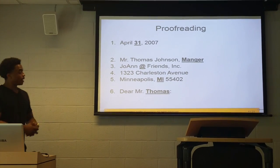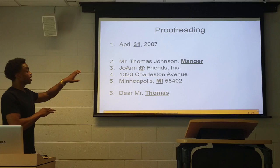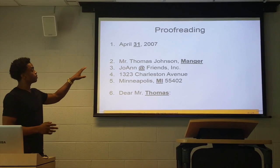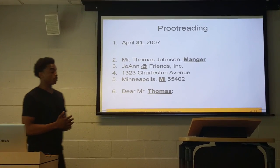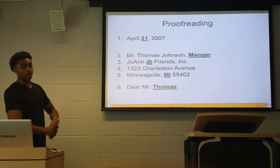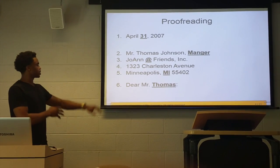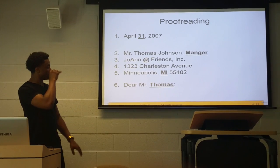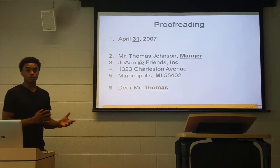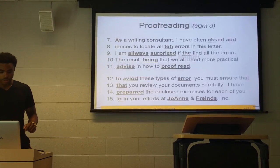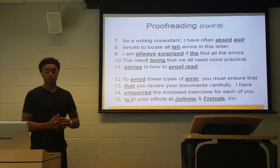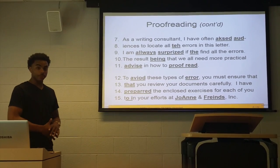So, we've got proofreading. Number one: April 31, 2007 — that 31 should be '31st' because that's the proper form. Number two: it's missing an 'A' after the 'N' in 'manager.' And right here, 'Dear Mr. Thomas semicolon' — that semicolon is actually supposed to be a comma when you're addressing the title of a person's name. This makes revising a very critical step in the writing process.